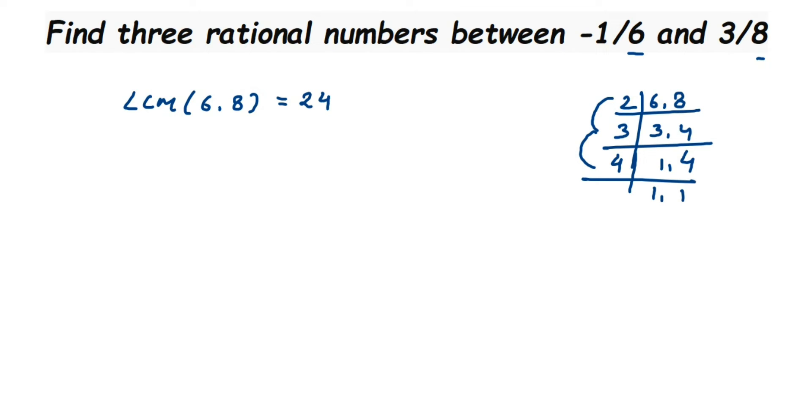Now we gonna make a denominator 24 for both the rational numbers. So here the first number I have is minus 1 by 6. Remember we are changing the denominator to 24.